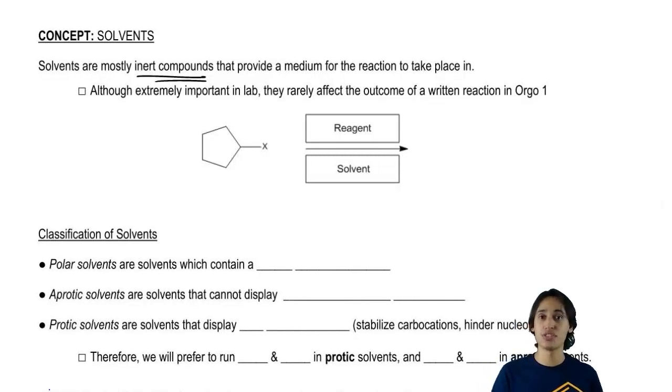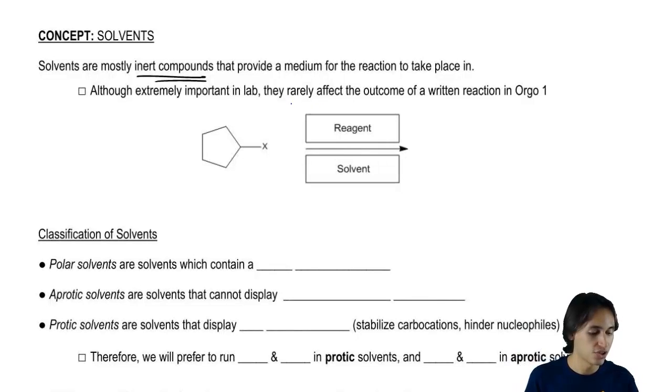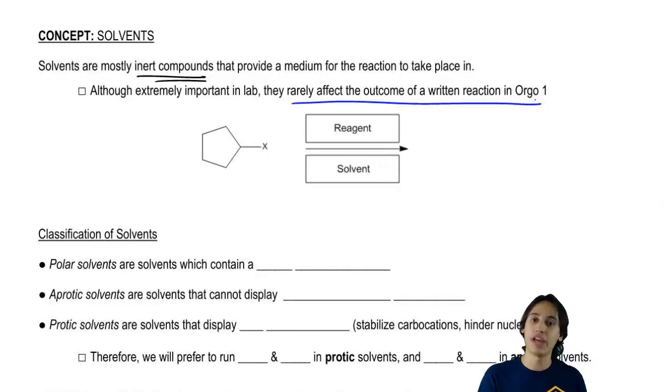So typically when we see solvent questions, it's going to be in the form of a conceptual style question where it will talk about what type of solvent is favored, but it's not going to be a mechanistic question where it will actually determine the type of reaction that you have. So just underline this part: these solvents are rarely going to affect the outcome of a written reaction, so many times we're just going to neglect them. We're not going to look at them too much.